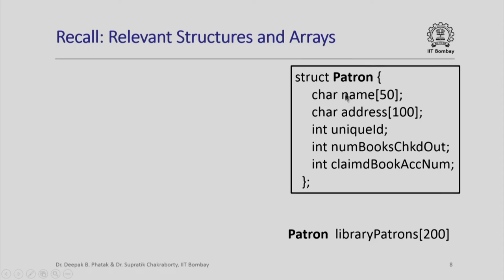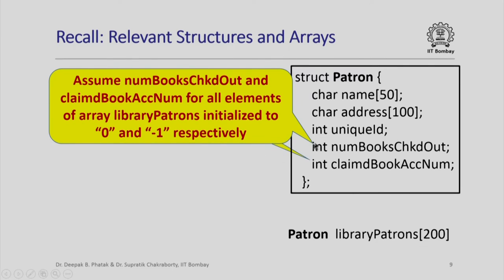The patron structure similarly has information about patrons of our library, with members like name, address, unique ID, number of books checked out, and the accession number of any book claimed by the patron. All patron information is stored in the array library patrons of size 200. For purposes of our programming, every element in this array will have its members numbooks_checked_out and claimed_book_accession_number initialized to zero and minus one. Zero means the patron currently has no books checked out, and minus one means the patron does not currently have a pending claim for any book.